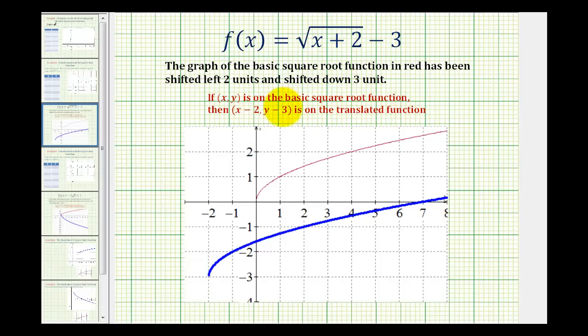So for any point x, y on the basic square root function, the point with an x coordinate of x minus two and a y coordinate of y minus three would be a point on the given function. Again, the blue function is shifted left two units and down three units from the basic square root function in red.